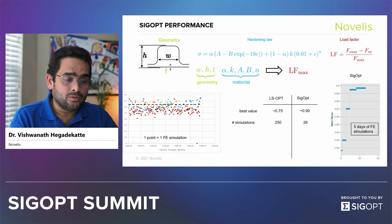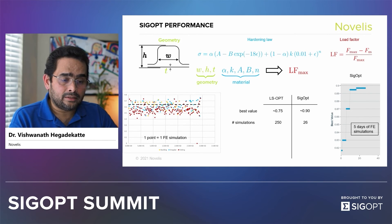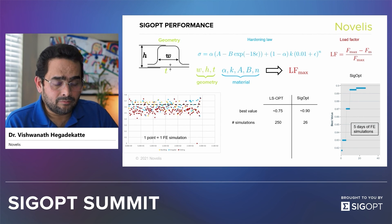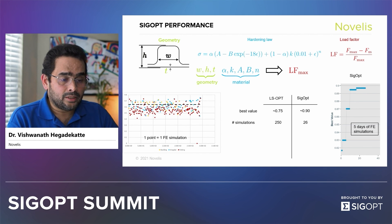So once again, here we used SIGOPT and compared with LS-Dyna's optimization tool, LSOPT. You can see that SIGOPT helped us come up with a better design that would give us a better load factor, and the number of computations was an order of magnitude lower than what LSOPT had made us run. This is another example where Bayesian optimization and SIGOPT specifically helped us reduce the number of computations.